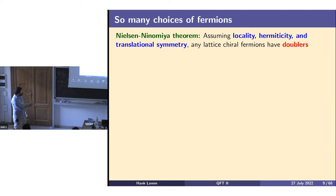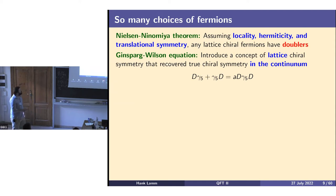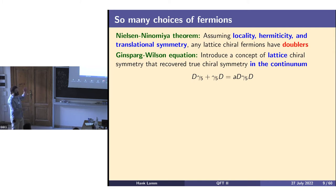There are many choices of what you can do, depending on what physics you care about and computational efficiency. The Nielsen-Niomea theorem tells you that if you assume a local action with Hermiticity and translational symmetry — all nice things to have for a lattice field theory — then any fermion you try to put down on the lattice that you want to be chiral, setting its bare mass to zero and getting back a renormalized mass of zero, is going to have doublers: additional fields sitting in your action. So you must choose between locality, Hermiticity, translational symmetry, chirality, doublers, and so on — and those choices have consequences.